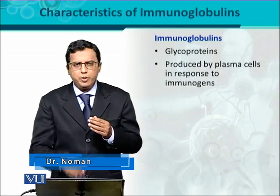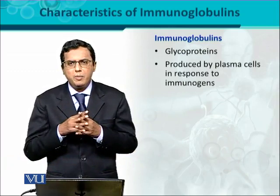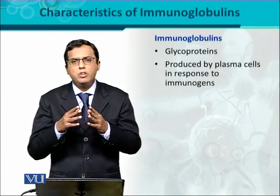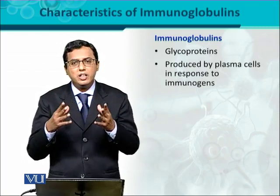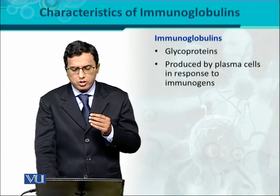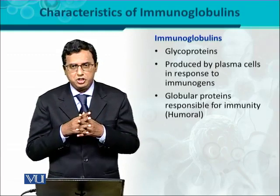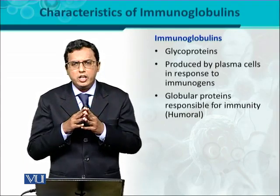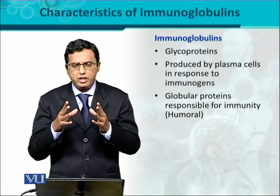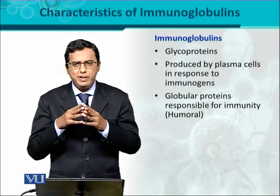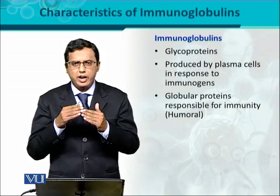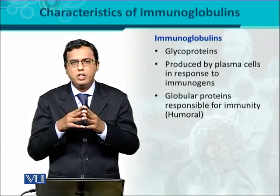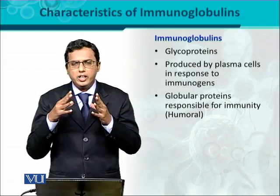The second important aspect of immunoglobulin is that these are produced by the plasma cells. The B cells are activated under the influence of immunogen and they transform into plasma cells, and finally the plasma cells produce these antibodies or immunoglobulins. These proteins are globular in nature - some proteins are globular, some are linear or fibrous - and these are responsible for specific immunity, particularly the humoral component, because they are present in secretions.